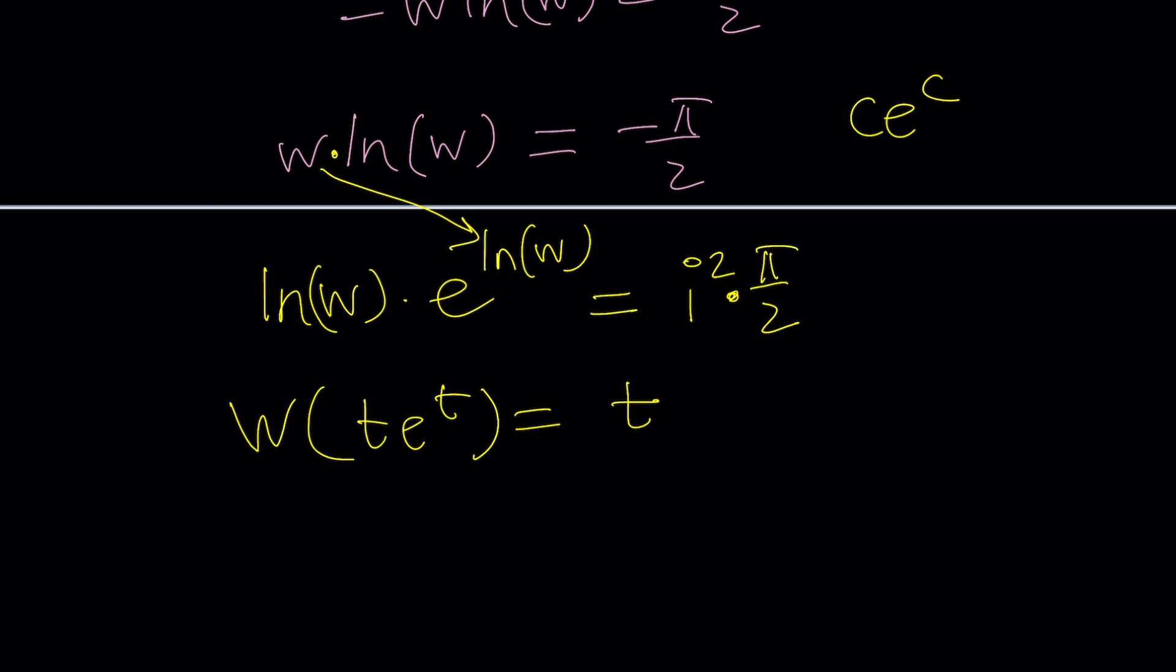Ready, set, go, i times iπ over 2. That's what I was trying to get at. Now, why is this significant? Because if you Lambert this and that, like on both sides.